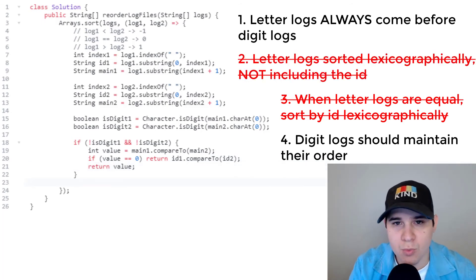So now outside of this if statement, this is where we're going to handle the rest of the rules, we know that there must be at least one digit log at this point. So we can say return if log one is a digit. So if digit one, and if log two is a digit, then if both of them are digits, we just want to leave them in the exact same order. So we can just return zero.